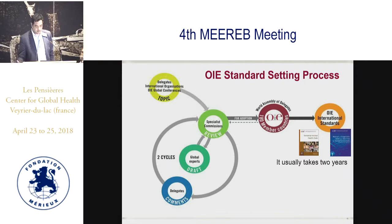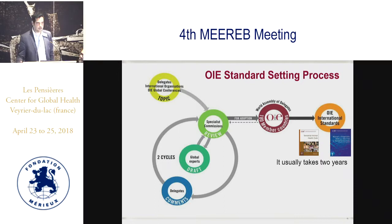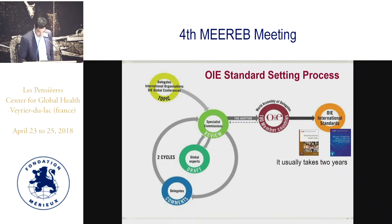When the specialist commission considers the chapter ready for adoption, it is presented to the World Assembly of Delegates at the end of May. The standard is presented for a vote. If member countries agree, the standard is included in the next edition of the Terrestrial Code or Terrestrial Manual and becomes international standard. It usually takes at least two years.